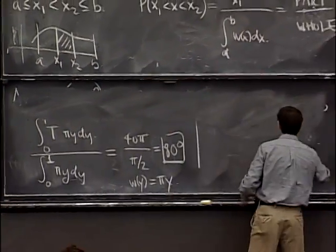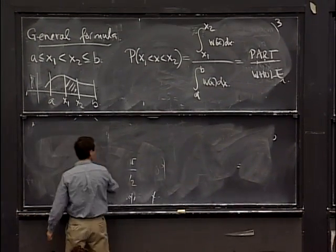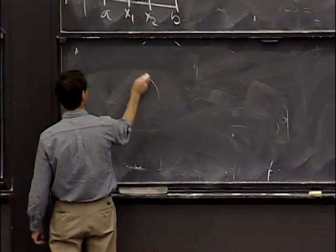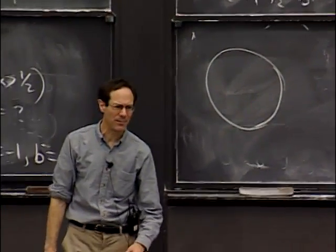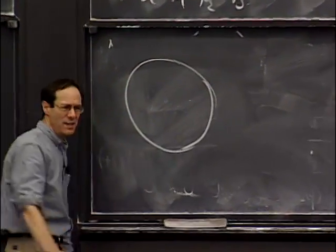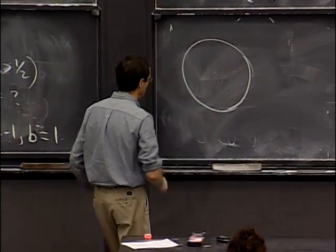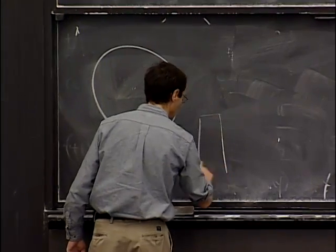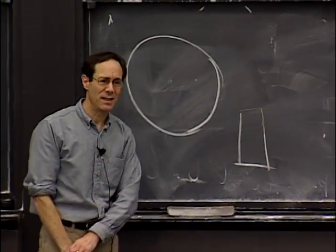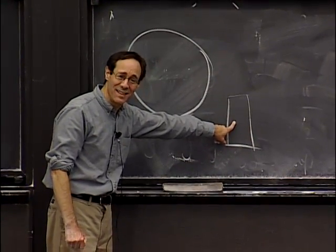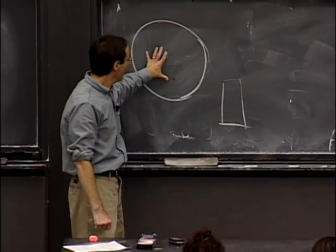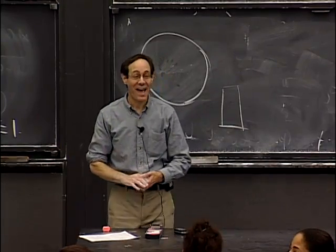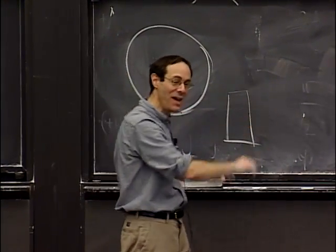Next time, we'll do a realistic probability example: a target practice problem. You have a target and you're throwing darts at it, while your little brother is standing next to the dartboard. The question is how likely you are to hit your little brother. We'll find out next time.